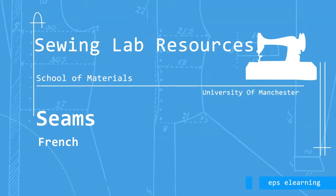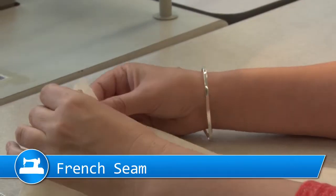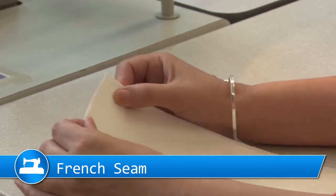This is a tutorial on how to create a French seam. Place the wrong sides of the fabric together.